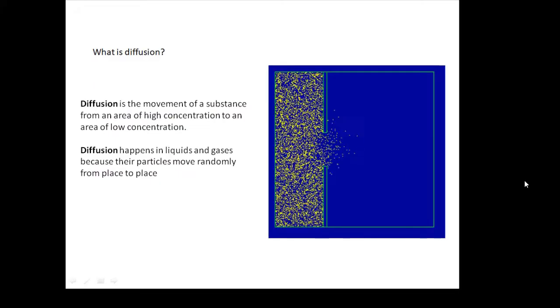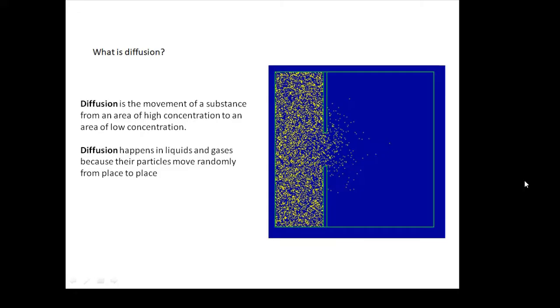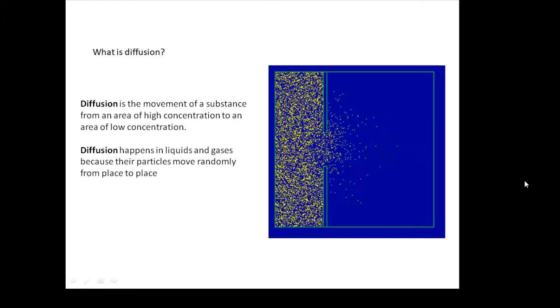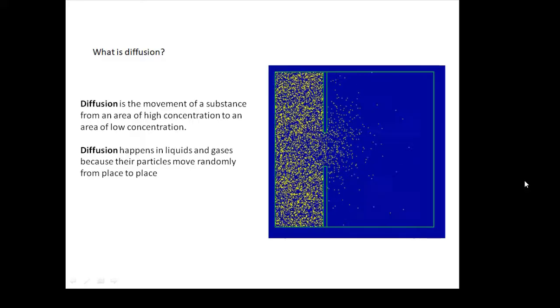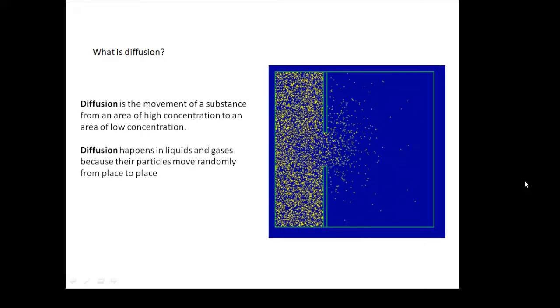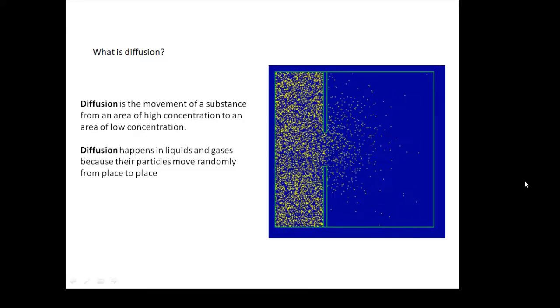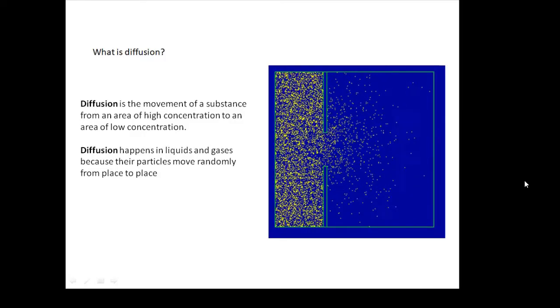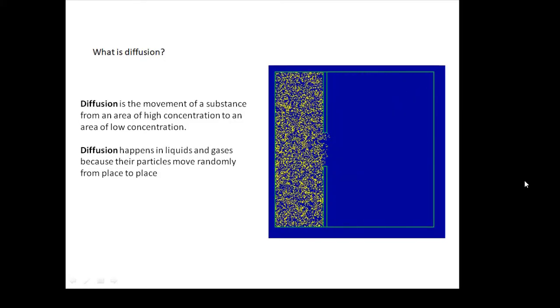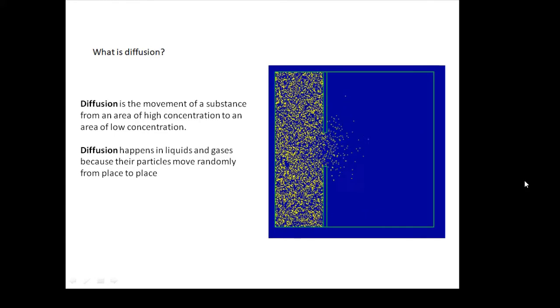What is diffusion? Diffusion is the movement of a substance from an area of high concentration to an area of low concentration. If you look at this animation, the little yellow dots are moving from a high concentration to a low concentration. Why are they doing this? Because the particles are moving randomly, and this natural mixing will occur as the particles are moving around.